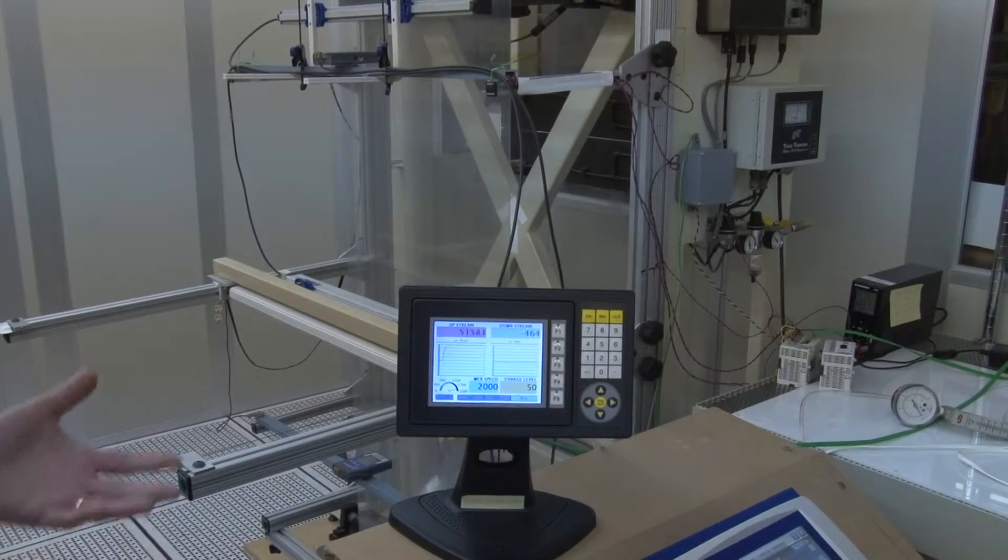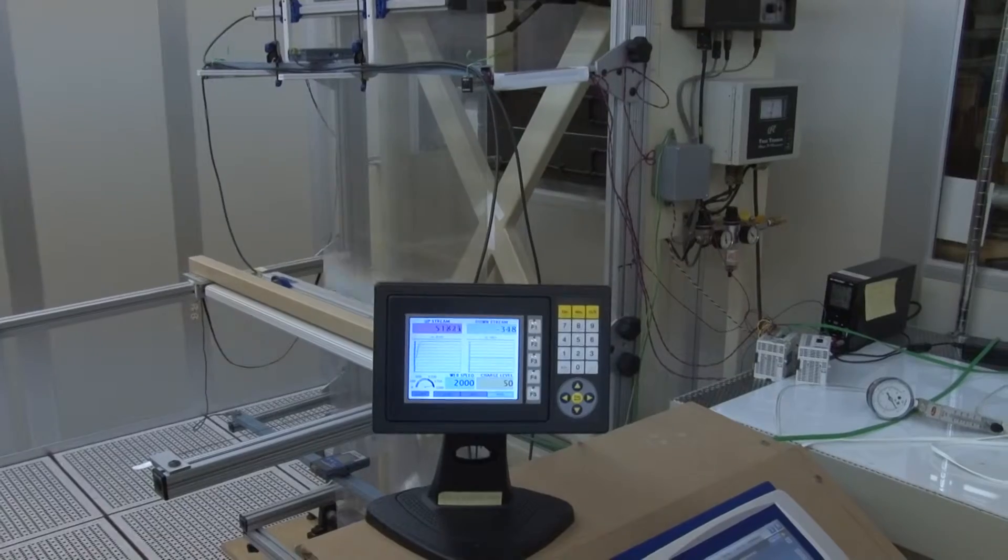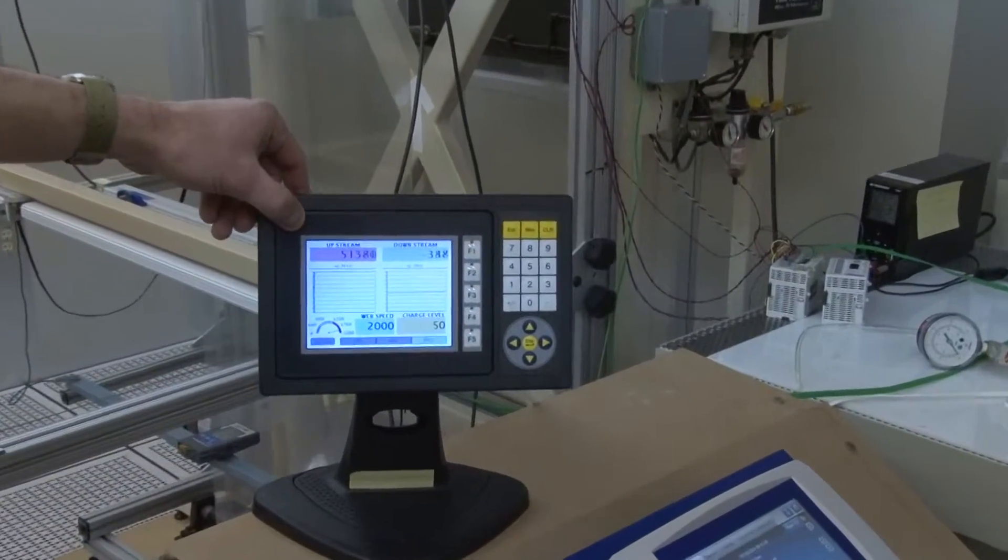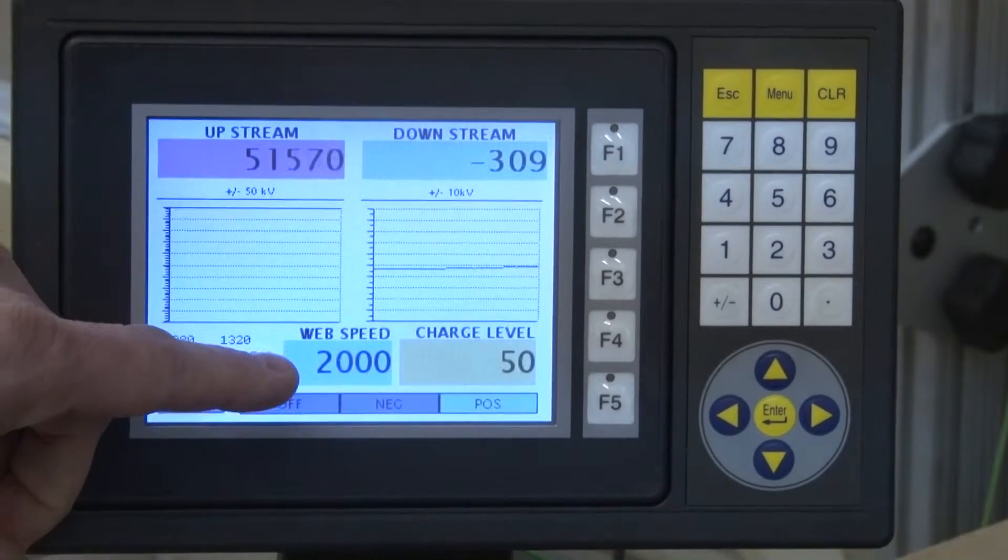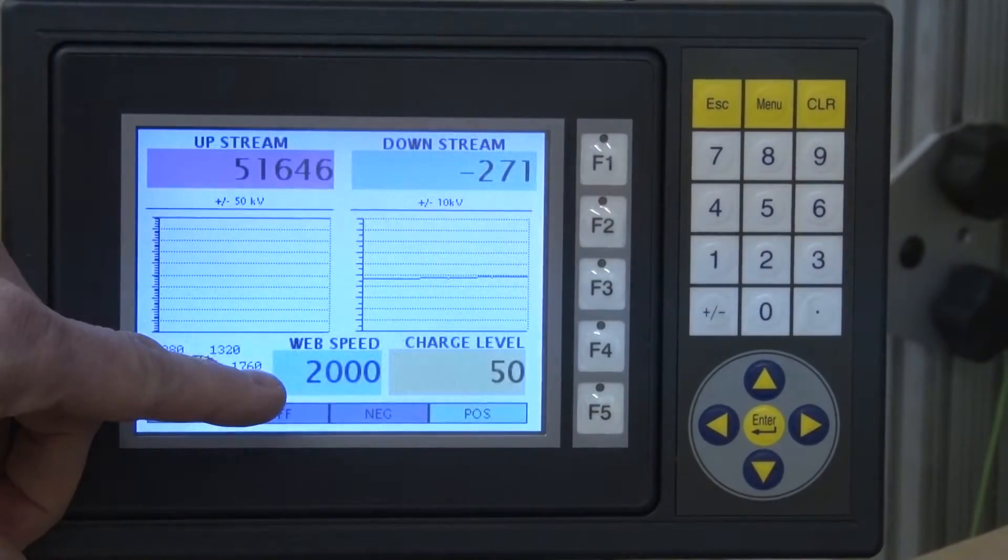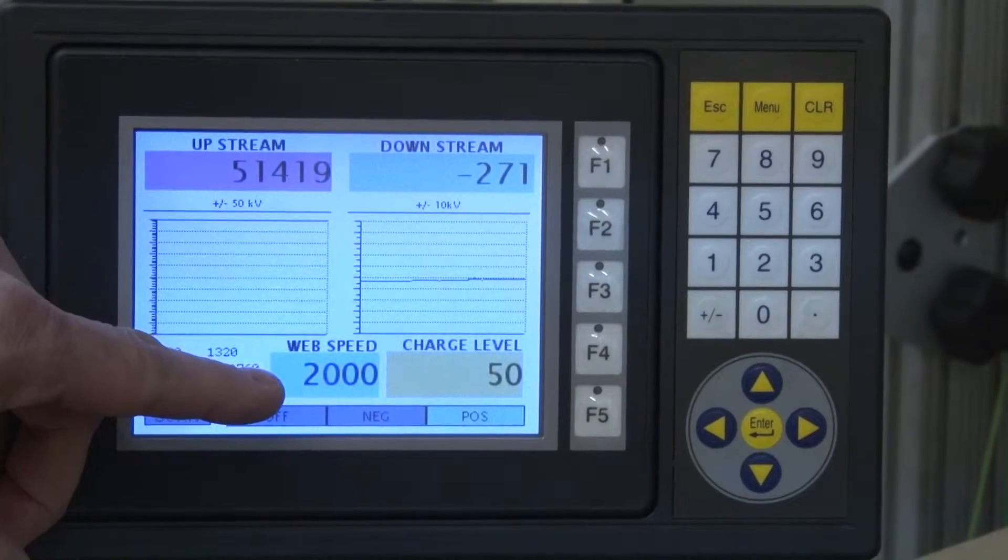The Dynamic Test System is controlled through a PLC, and the interface for the PLC is this screen here. It allows us to set the web speed in thousands of feet per minute, which is 2,000 feet per minute right now.